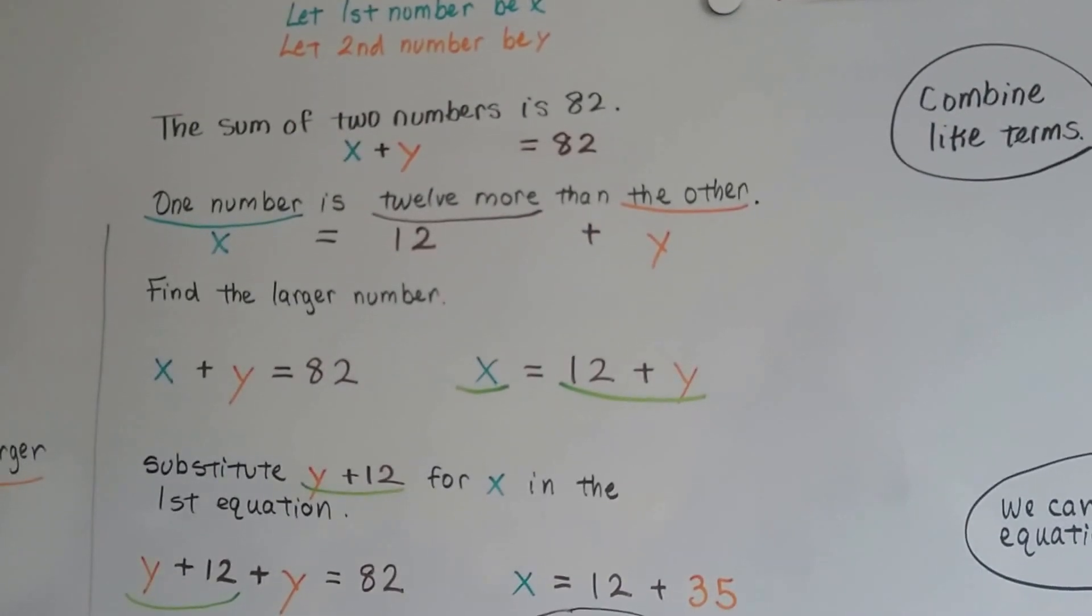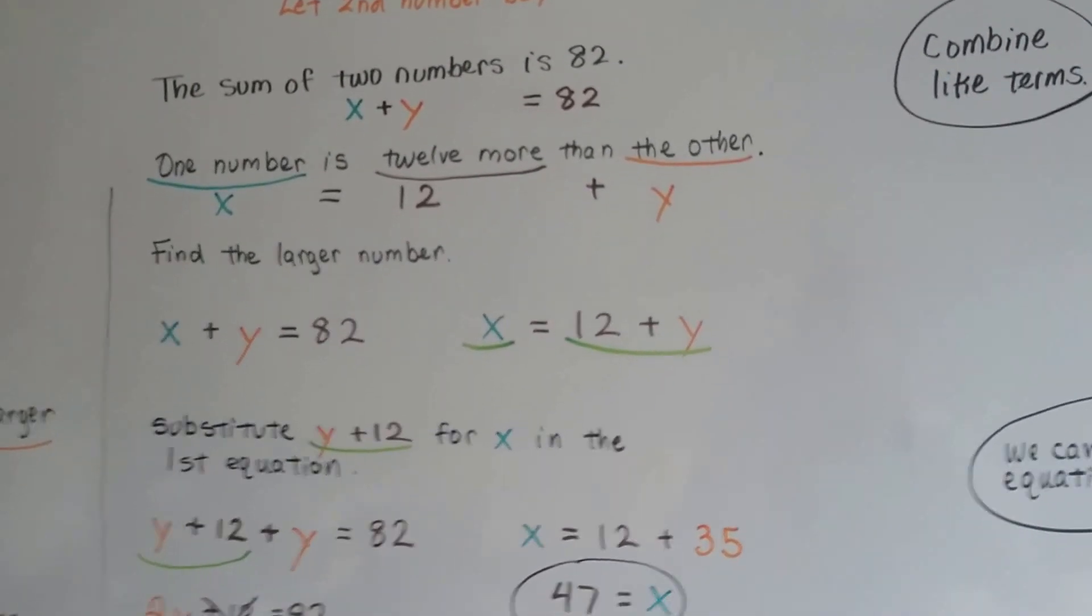Because more than is going to be a plus. And if it says 12 times more than, then it's going to be 12y. Okay? So be careful about that.